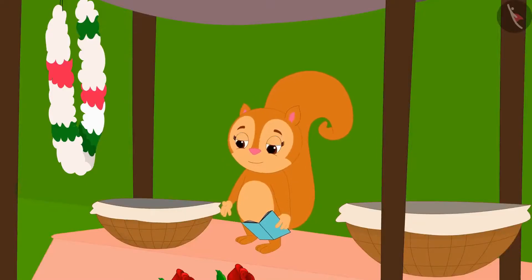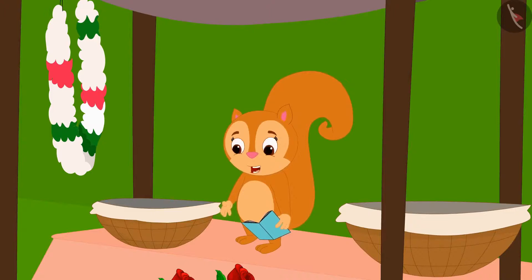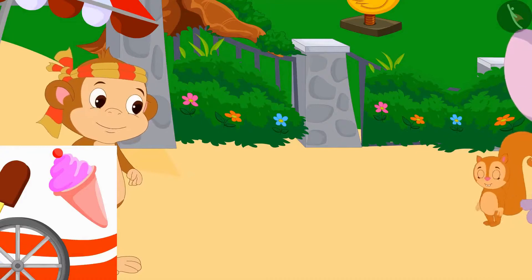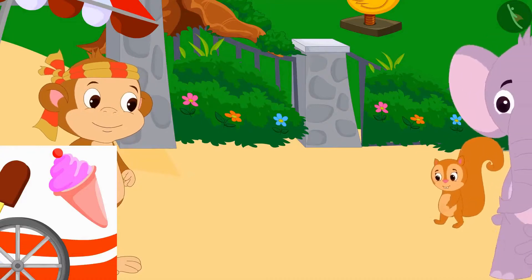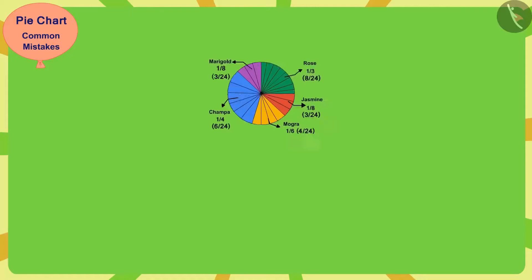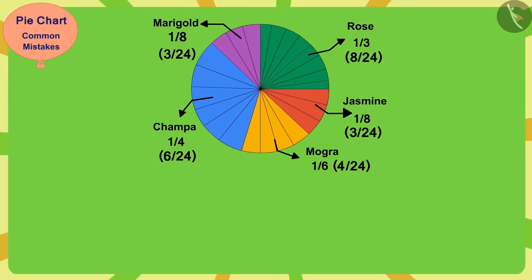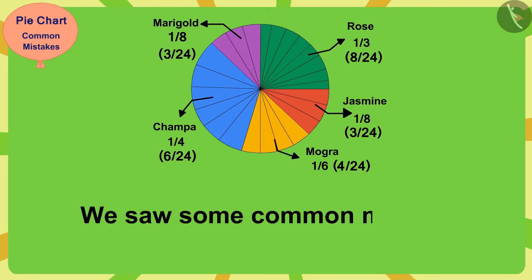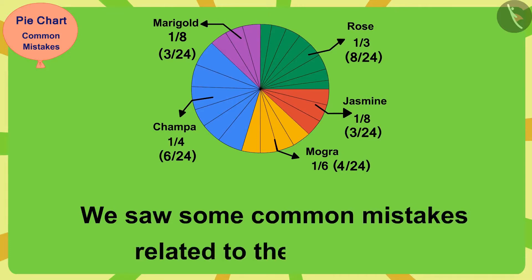Chanda says, 'Thank you Appu, now I will never repeat this mistake. For this help, allow me to buy an ice cream for you from Babban's ice cream stall.' Both Chanda and Appu went to eat ice cream. Children, in this video we saw some common mistakes related to the pie chart.